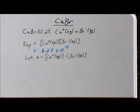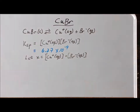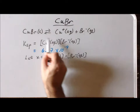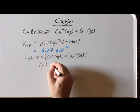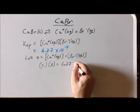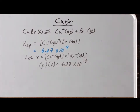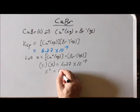Now we have our equation: the concentration of copper plus 1 times the concentration of bromide equals the Ksp. Substituting x in for the concentration of copper plus 1 and also x for the bromide, we get x times x equals 6.27 times 10 to the minus 9. Since x times x is x squared, we can write x squared equals 6.27 times 10 to the minus 9.